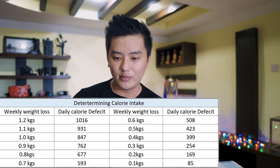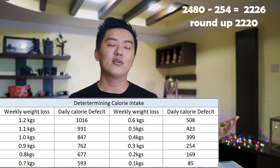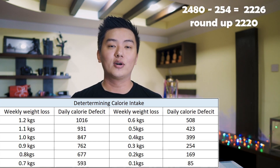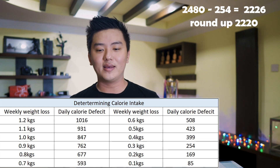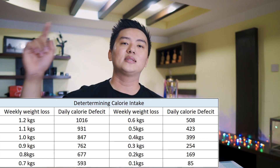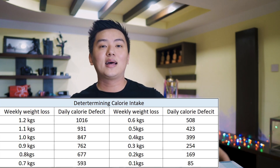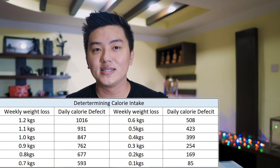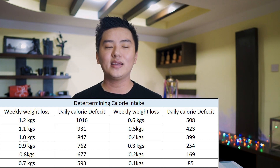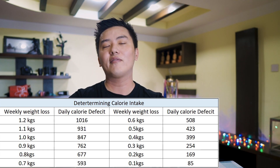If you want to lose only 0.4 percent of body weight per week — about 300 grams for a 75kg person — you'd cut only 254 calories per day. If you want to lose 1 kg per week your deficit needs to be 847 calories, and for 1.2 kilos per week it's a 1016 calorie daily deficit. This table helps you identify your exact calorie target.